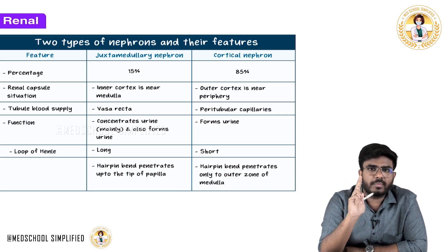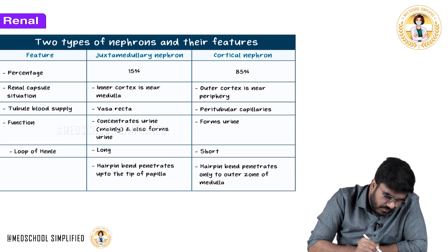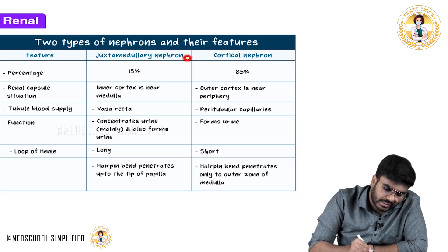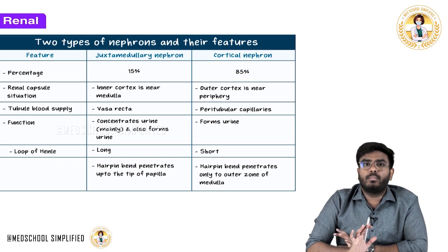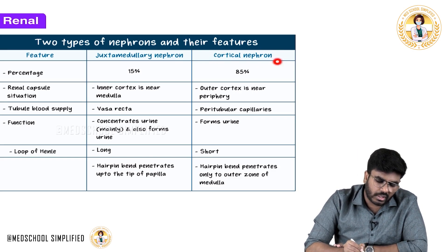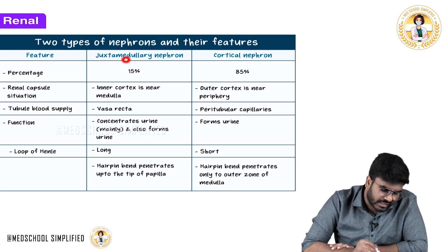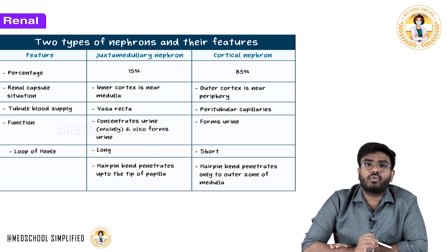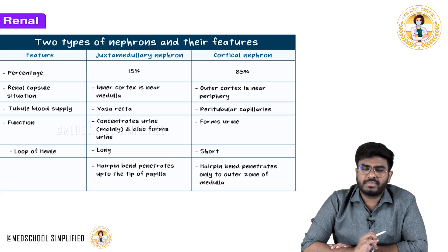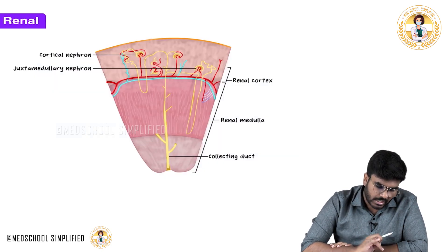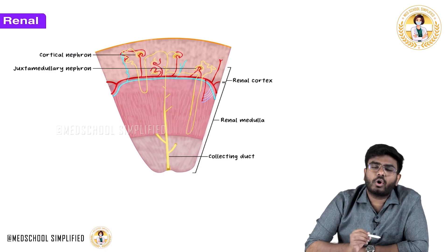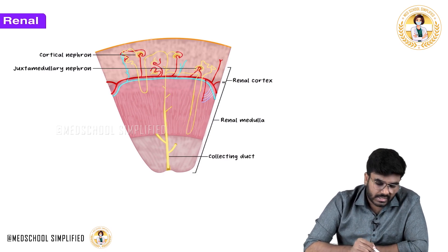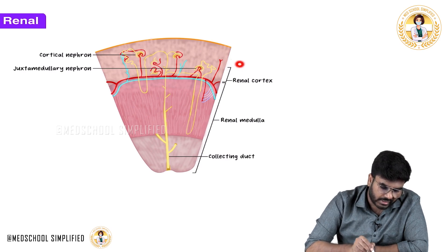There are two types of nephrons. The classification is based on their location. The kidney is divided into two parts — the outer cortex and the inner medulla. The first type are cortical nephrons, which are the most common — maximum in number.